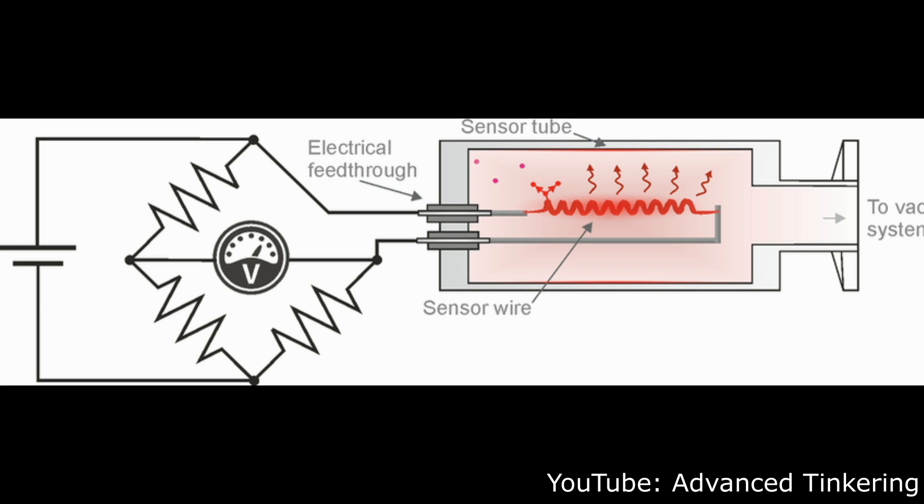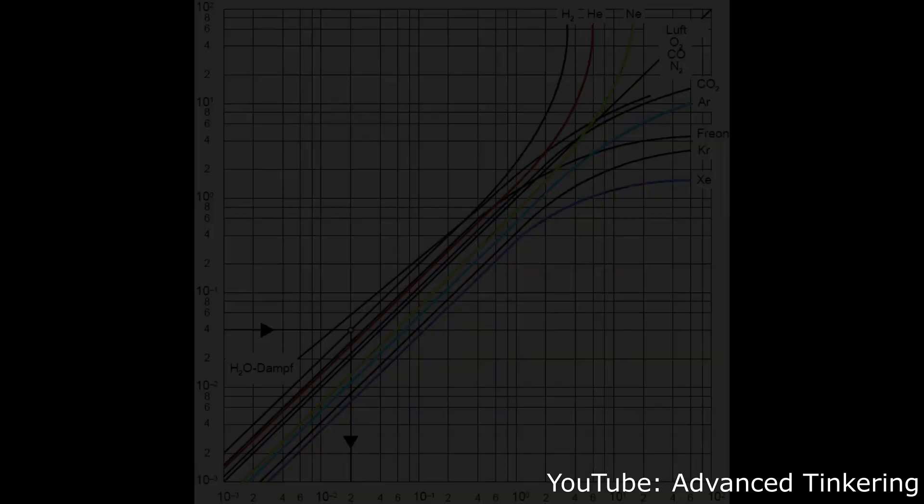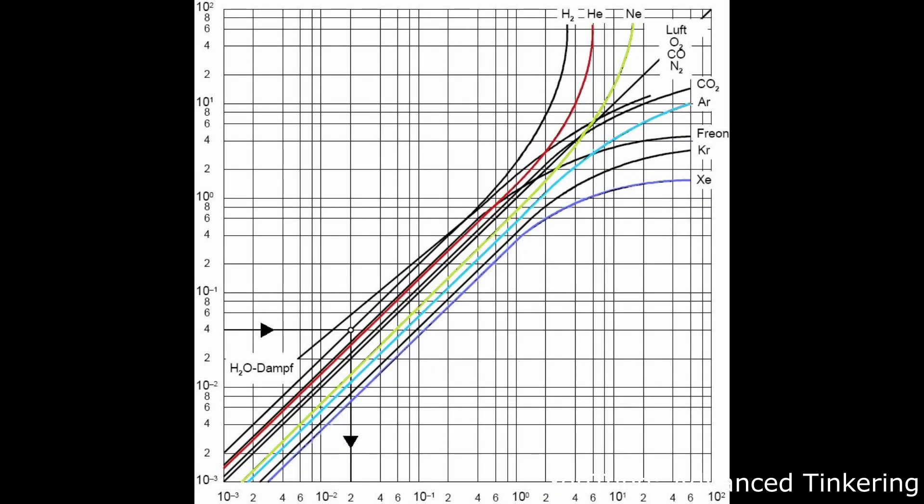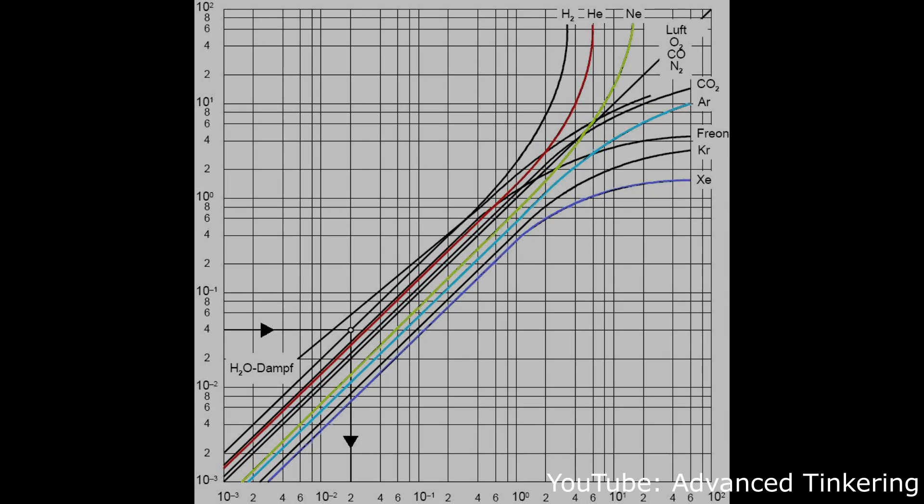There are different ways to determine the heat loss. The simplest way would be to determine the resistance of the wire because the resistance changes with the temperature. Since the thermal conductivity and the heat capacity of the gas affects the readout of the sensor, you have to calibrate your Pirani gauge to the gas you want to measure. In our case that's not a problem because the gauge I bought is already calibrated for air.